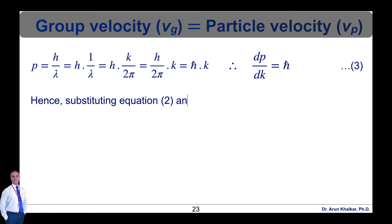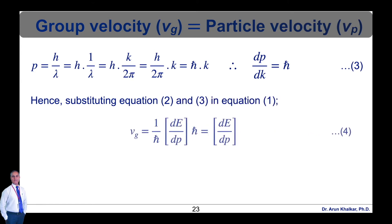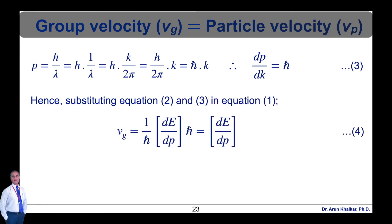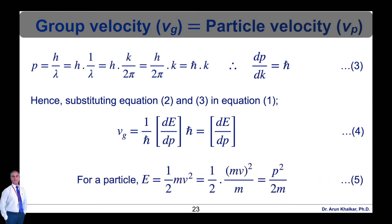Substituting equations 2 and 3 into equation 1, we get vg = (1/ℏ) · (dE/dp) · ℏ. The ℏ terms cancel, giving the final equation vg = dE/dp. Let this be equation number 4.